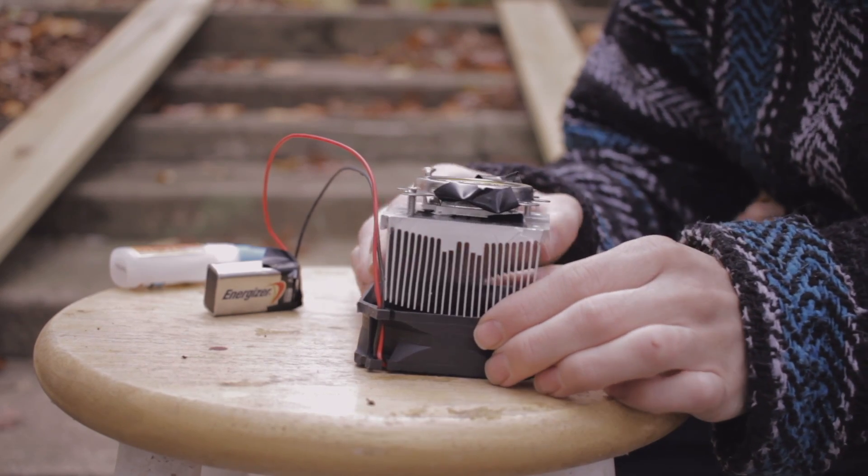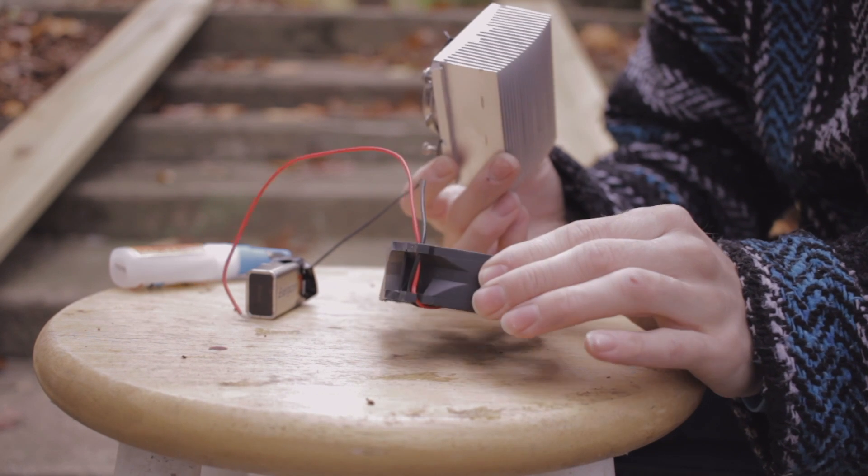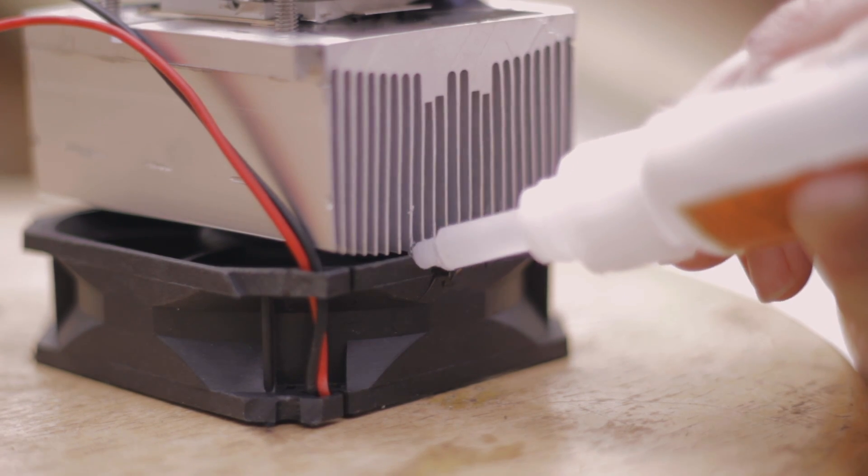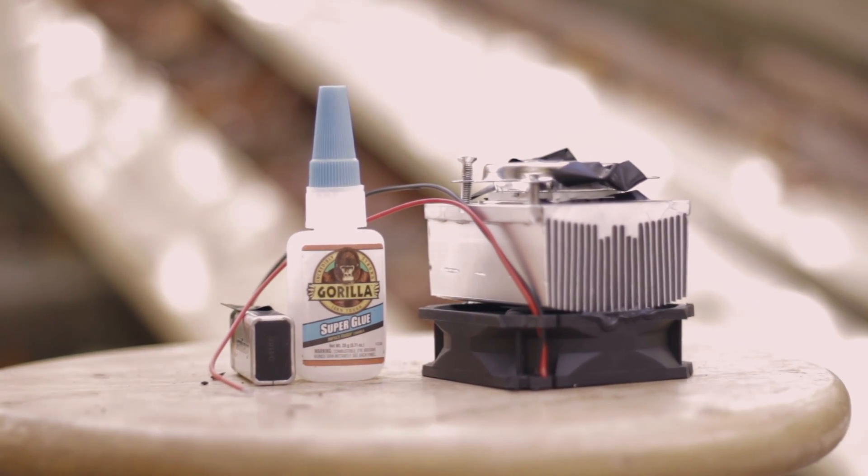But before gluing these together, you might want to connect a battery to the fan just to make sure the air is flowing in the right direction. You want the air flowing away from the heat sink and not towards it. After the glue dries, the fan should be very firmly connected to the heat sink.